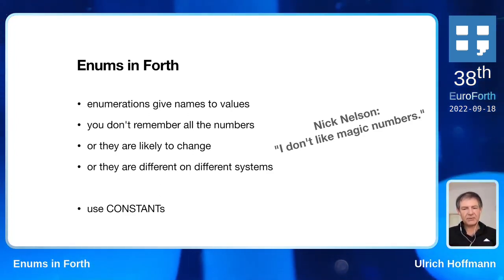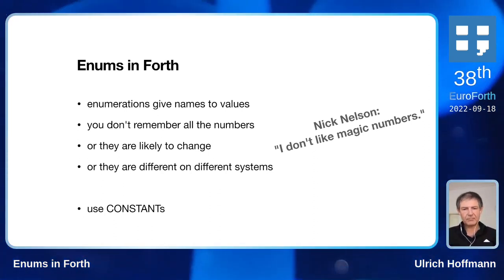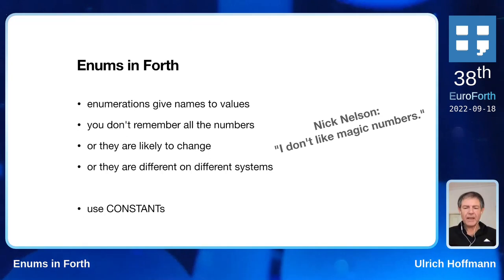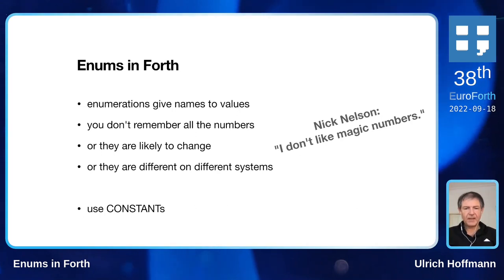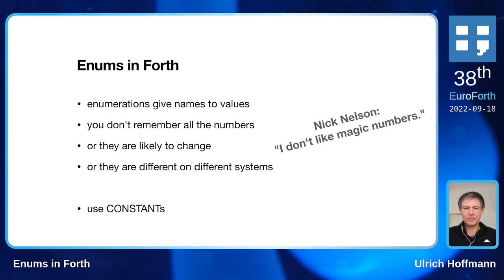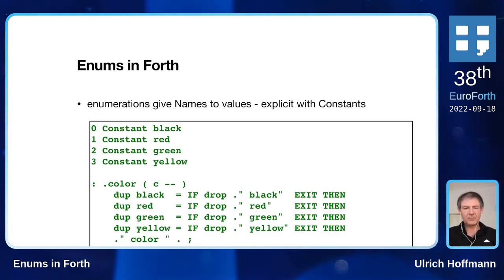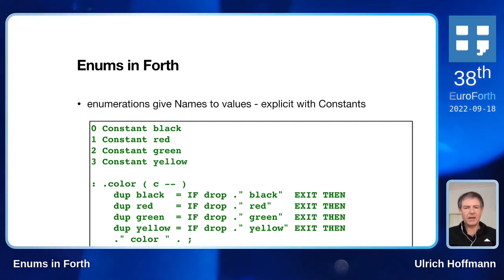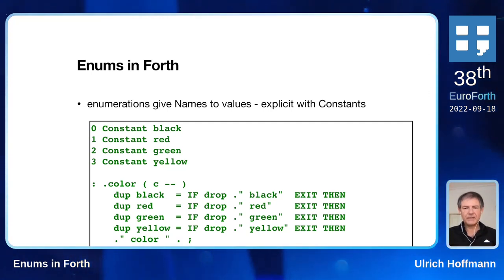Or the numbers are different on a different system. So if you want to port your program to another system that happens to have different values for these magic numbers, for the enums, then you need to change it as well. So the solution is to use constants. What we can do — let's say we want to have an enum of colors: black, red, green, yellow — we can just go ahead and define constants, so black becomes zero, and so on. Then instead of the magic numbers, you can use the appropriate enum names.